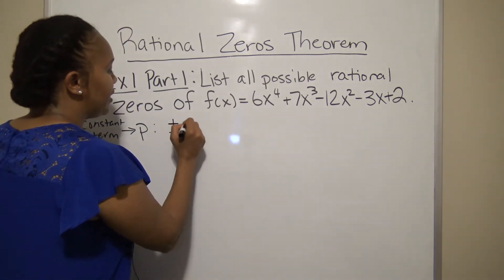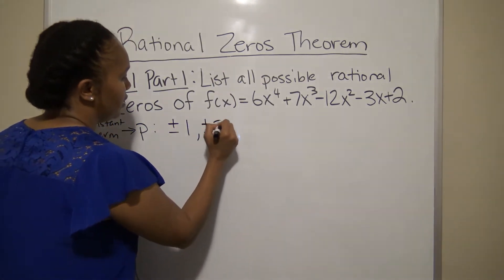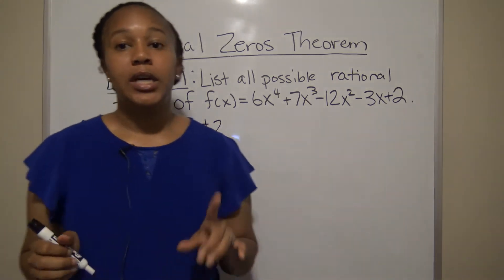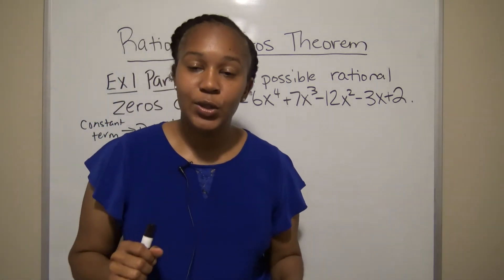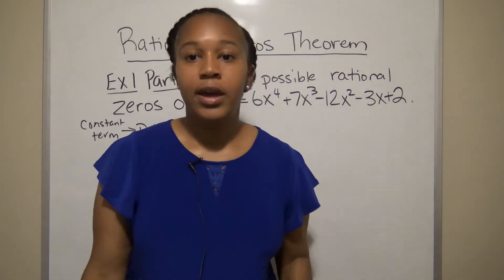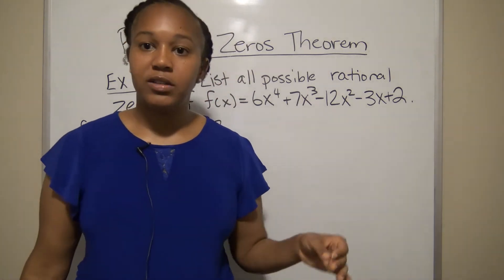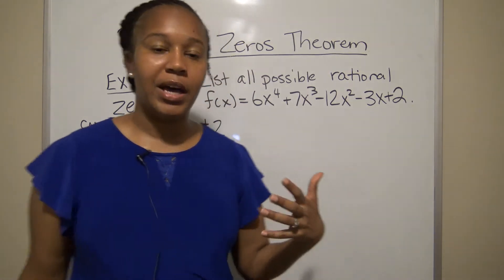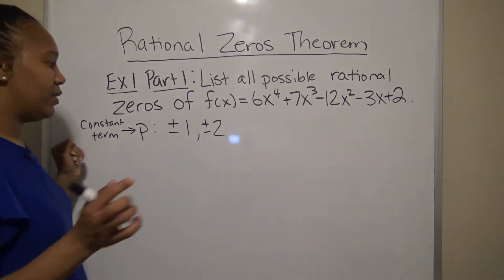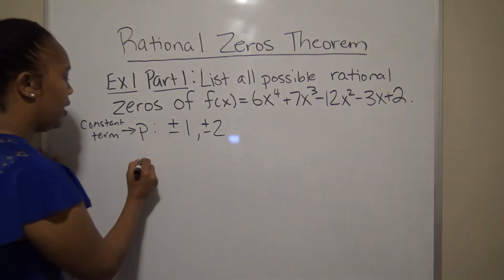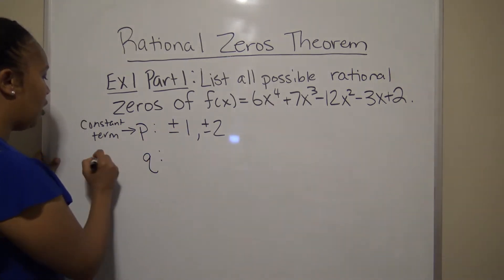You have to take plus and minus those numbers. Why? Because negative 1 times negative 2 is positive 2, and positive 1 times positive 2 is also positive 2. So you have to consider both the positive and negative values.